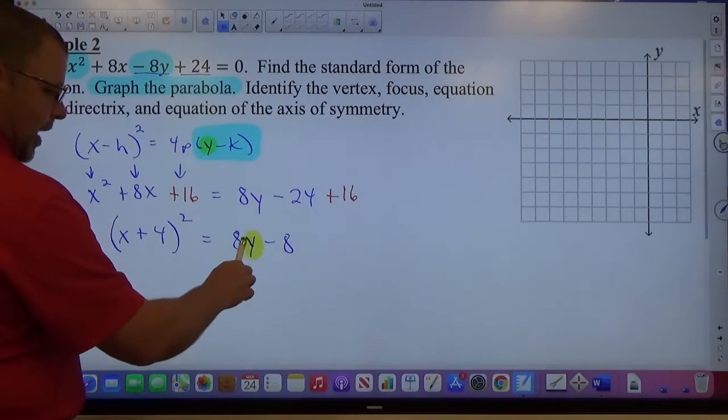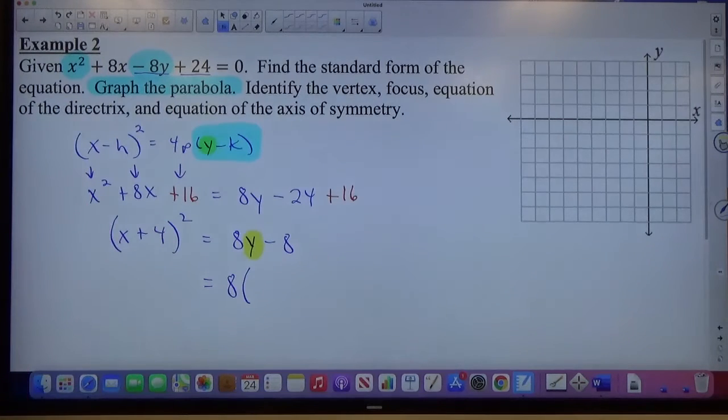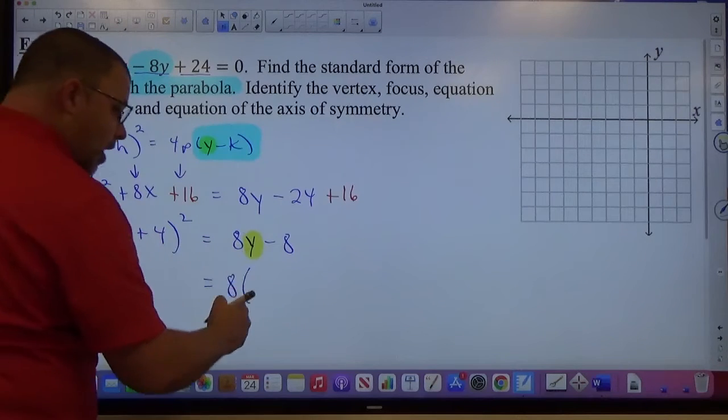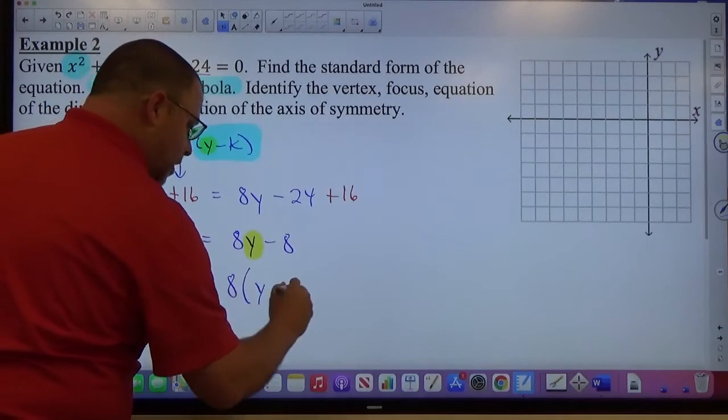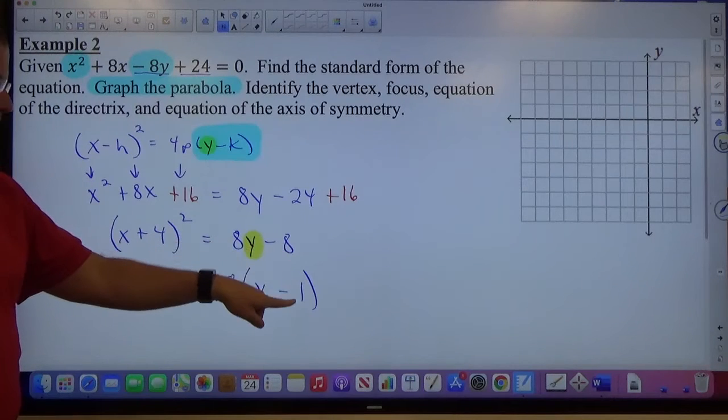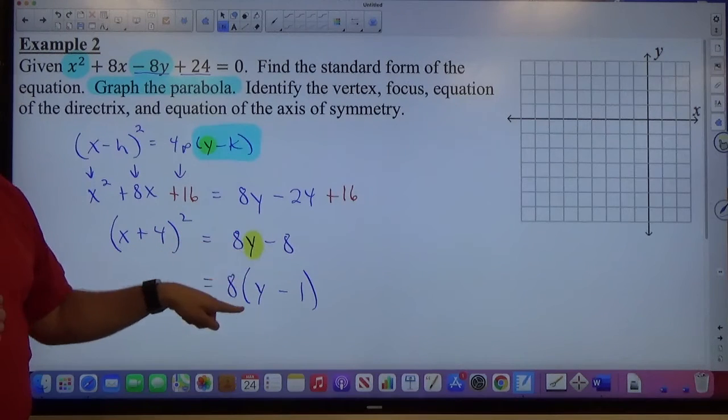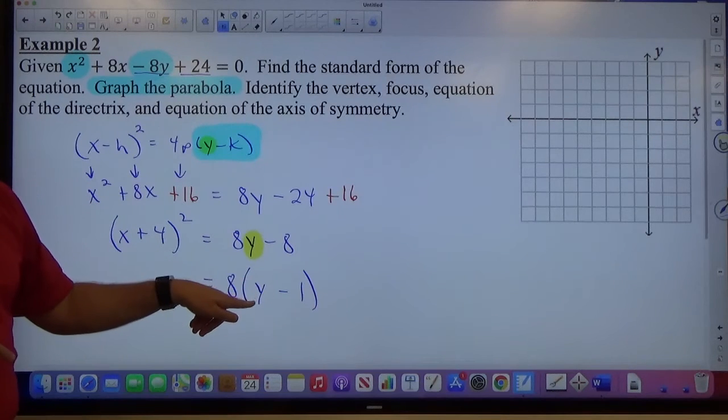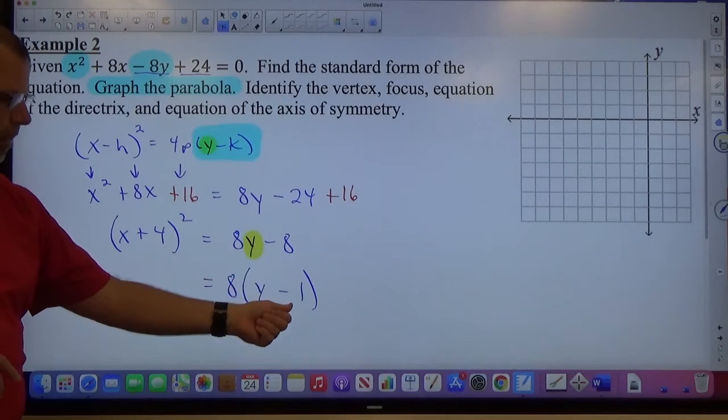So I don't care what this number is. I care what that number is. Whatever that number is, I put a parenthesis in front of it. 8 parenthesis, and then I divide each term by it. 8y divided by 8 is 1y, which is what we wanted. Minus 8 divided by 8 is minus 1. If this said minus 9, now it's minus 9 eighths, which is 1.125. We're graphing some decimals. If this said 17, now it's 17 eighths, 1.875. I don't care what this number is. I just need this to be y. So whatever that number is, pull it out, divide this and this by it.